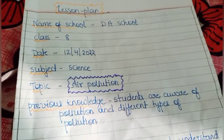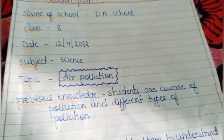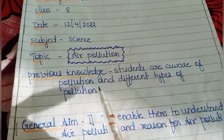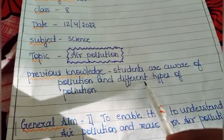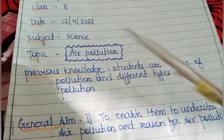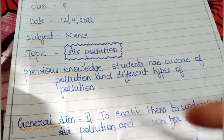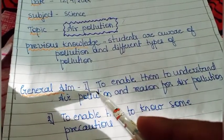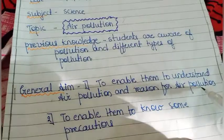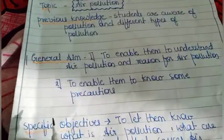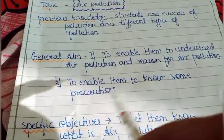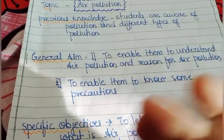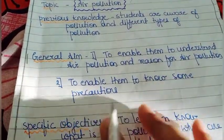Here you can see how we have to make the lesson plan. Under previous knowledge, we write that the student is already aware of different types of pollution. The general aim is to enable them to understand air pollution, the reasons for air pollution, and to know some precautions — how we can get rid of air pollution.